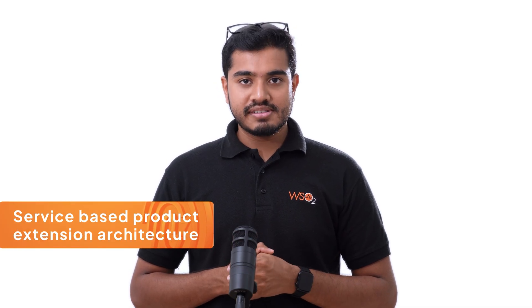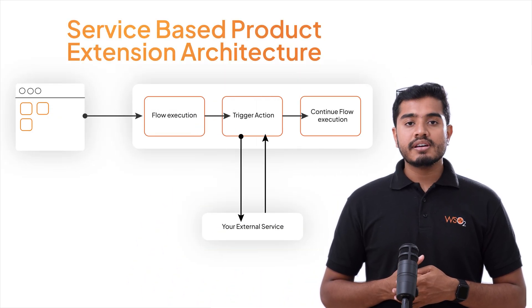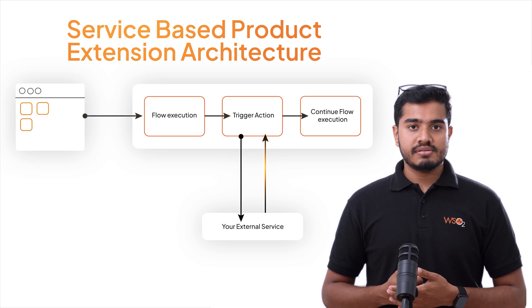In our previous Identity Server versions, custom extensions required extending the provided classes, writing your own implementation in Java, and hosting them within the IS itself. Identity Server 7.1 onwards, we provide the service-based product extension architecture where you can write your own language-independent extension, deploy, and integrate just with APIs. As you can see in the diagram, during the flow execution, the action can be triggered for the extension, and with the response, we can continue further. To try out the capabilities, use the sample applications. Links to the sample applications and extensive documentation can be found in the description.